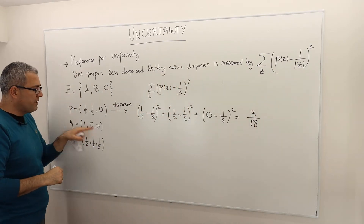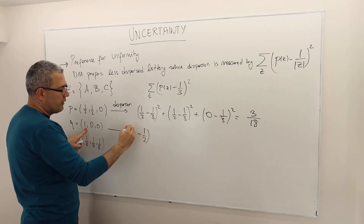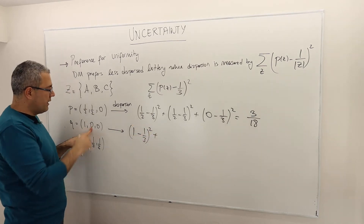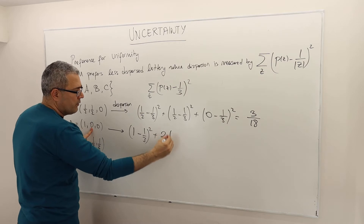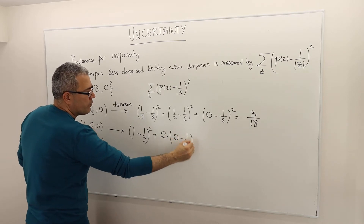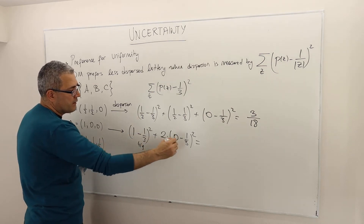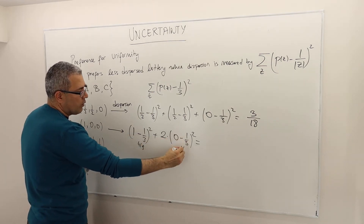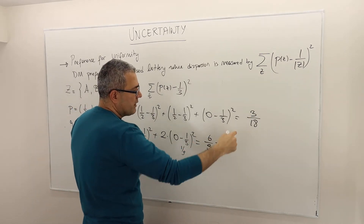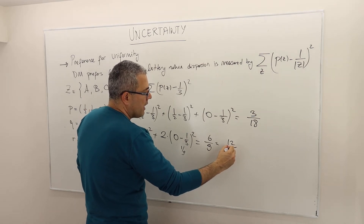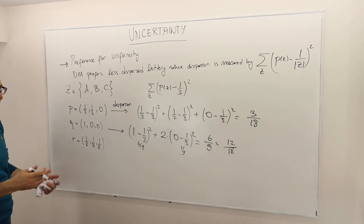Next, for lottery two (1, 0, 0): the dispersion is (1 minus 1/3) squared plus 2 times (0 minus 1/3) squared. That is (2/3) squared = 4/9, plus 2 times 1/9 = 2/9, giving 6/9, or equivalently 12/18. So this is significantly higher, as we said — because the concentration is way too much on just one outcome.